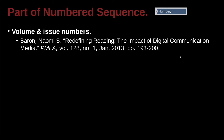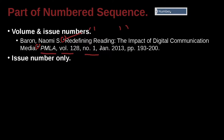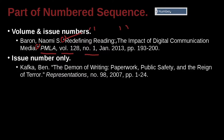What about volumes and issue numbers? Here we have an example of Baron Naomi S. — that's her middle name — and this is the journal article name, indicated by the quotation marks. Quotation marks means it's part of something bigger. The journal name is PMLA. The volume number is 128, and the issue number is 1. This information is included in the journal, and we just go ahead and use that information as specifically as possible.